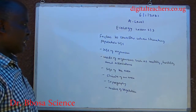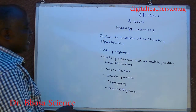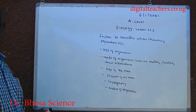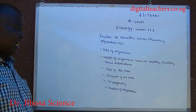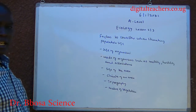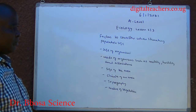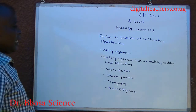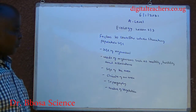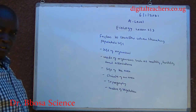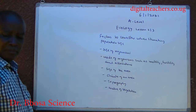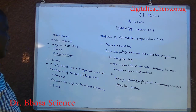Factors to consider when estimating population size: size of organisms — big organisms can be counted directly. Mobility of organisms such as hostility, mobility and association. Size of the area, climate of the area, topography of the area, and nature of vegetation.